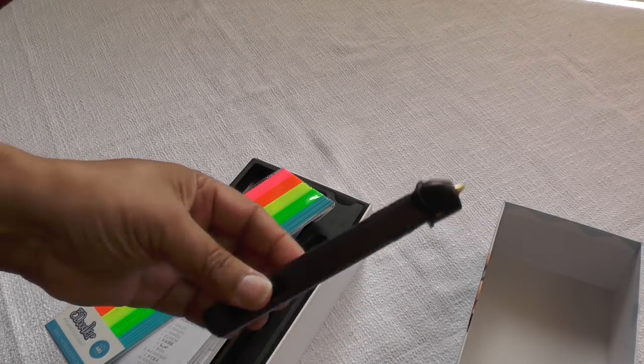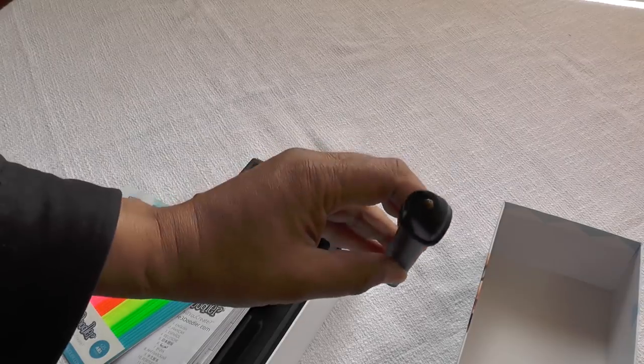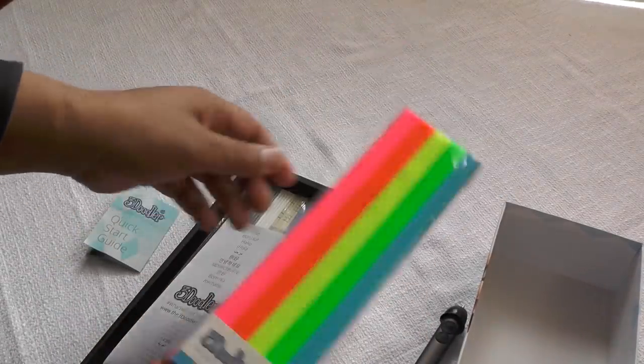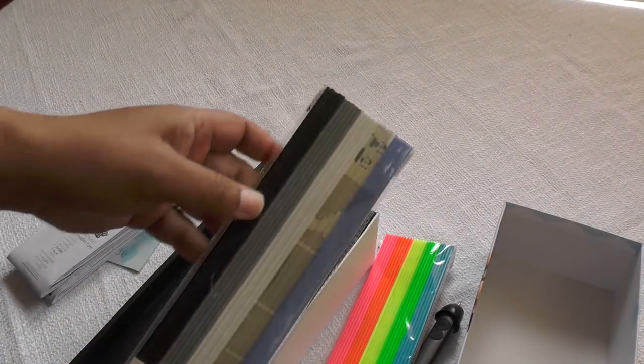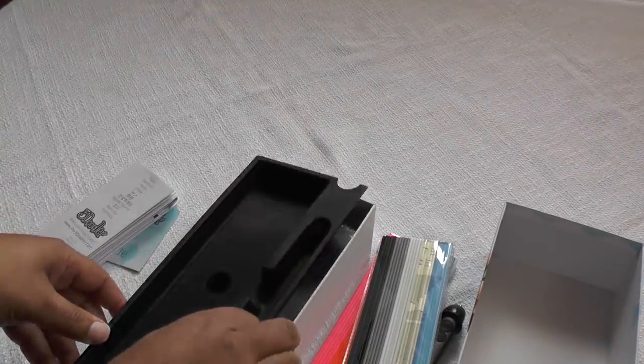You've got the actual 3Doodler itself, which is a mains powered little pen, extrusion pen. You have ABS multicolored stock or filament as it's called in the trade, plus PLA filament which is slightly more eco-friendly.